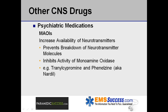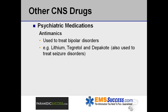MAOIs increase the availability of neurotransmitters by preventing the breakdown of neurotransmitter molecules by inhibiting the activity of monoamine oxidase, which is responsible for breaking down the transmitters. Antimanic drugs are used to treat bipolar disorders. Examples include lithium, as well as Tegretol and Depakote, which are also used to treat seizure disorders.